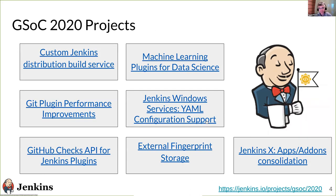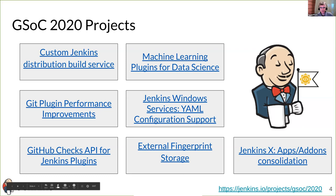The projects this year are the ones shown on your monitor: the custom Jenkins distribution service, Git plugin performance improvements, Git objects for Jenkins plugins, machine learning plugins for data science, Jenkins Windows services, YAML config support, external fingerprint storage, and Jenkins X apps add-ons consolidation. You can find the details of these projects on the link provided at the bottom of the slide, and we invite you to visit those pages.